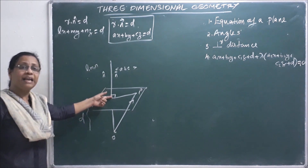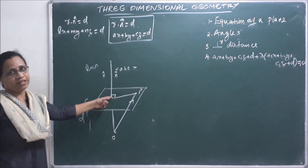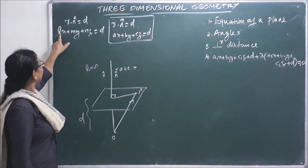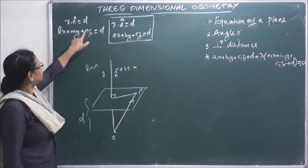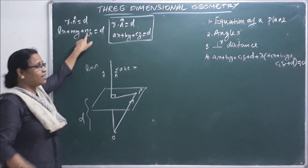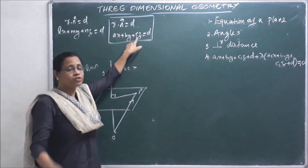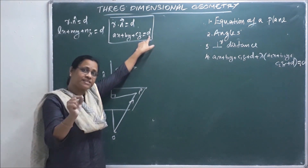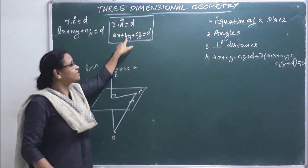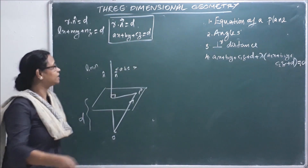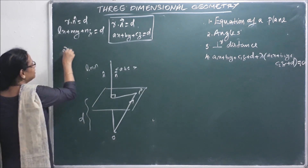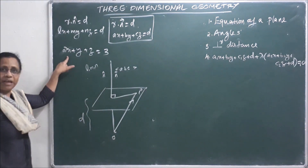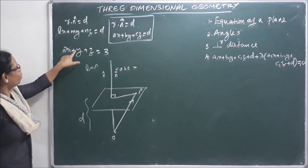We have a distance from the original plane. In the normal form, the coefficients satisfy L squared plus M squared plus N squared equal to 1, and A squared plus B squared plus C squared equal to 1. For example, consider 2X plus Y plus Z equal to 3, where A, B, C are 2, 1, 1.